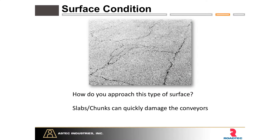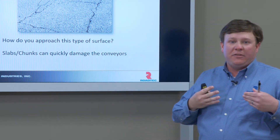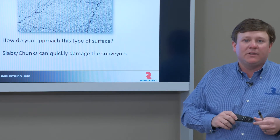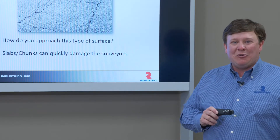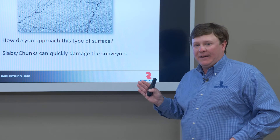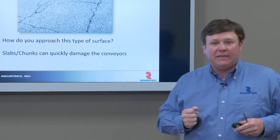Another responsibility of the ground man is to know the surface condition. How do you approach a deteriorated surface? The answer is to slow down and put pressure on the front moldboard. When you see a road surface that's deteriorated in this manner — which is fairly common — if you're moving too quickly without enough pressure on the front moldboard, slabs of material will just rip up into the machine. That damages the conveyors and creates downtime — especially critical when you have trucks of hot mix asphalt and a paving crew right behind you.